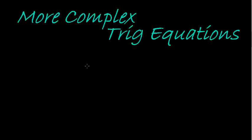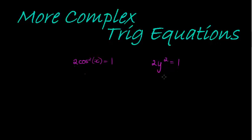Let me start with a simple equation. Let's say we have something like 2cos²x = 1. If we had something like 2y² = 1, we would say y² = 1/2, and then we take a square root on both sides to get rid of the square, but then we must use a plus-minus.